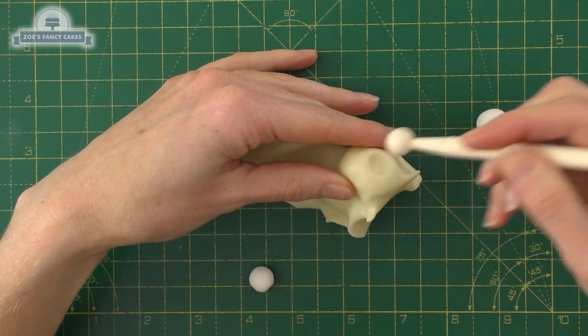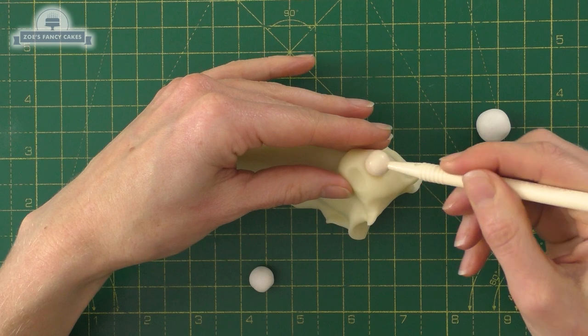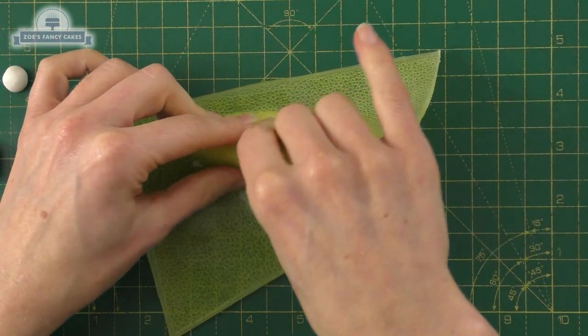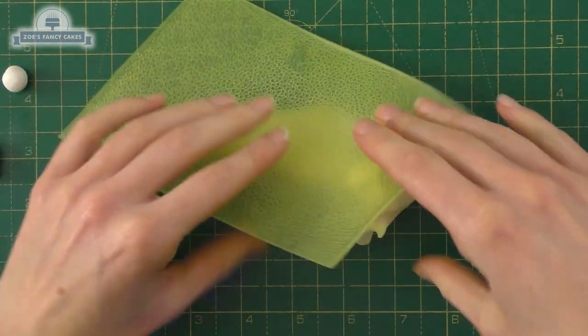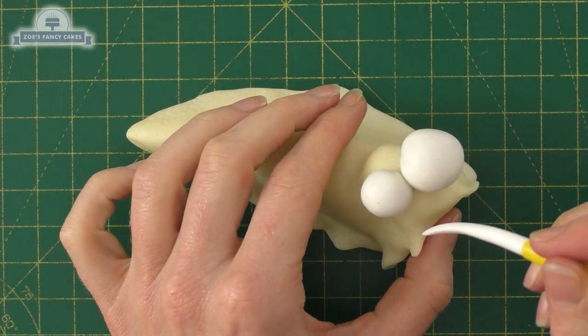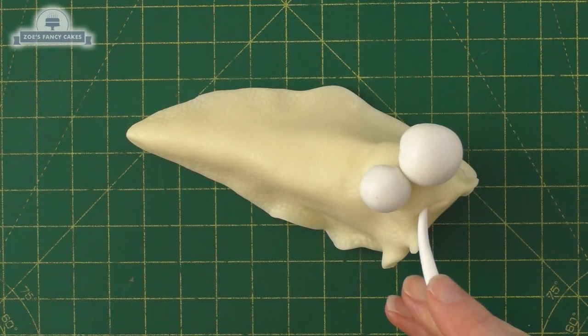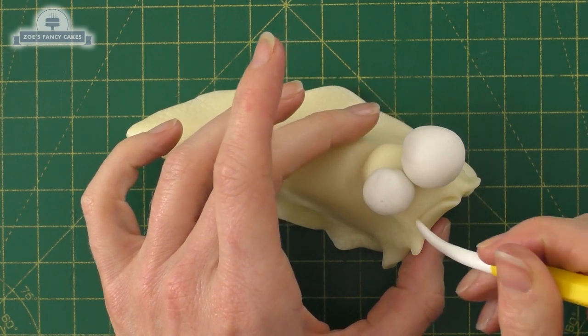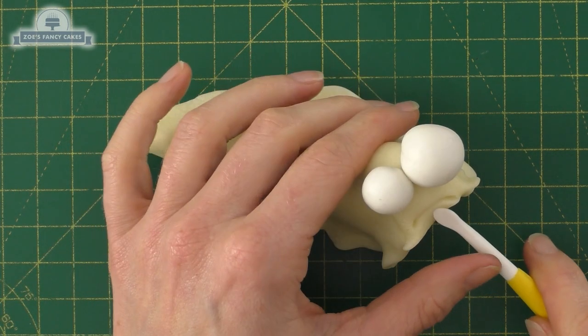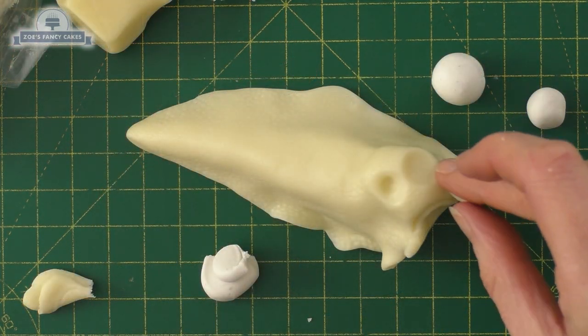So I'll just get those ready. I'm going to use an impression mat. This one's actually a basketball impression mat, but I thought it'd just give me a really nice texture on my snail. Just using a Dresden tool or a pointy-ended tool, just draw in a mouth. So he's going to be sad, so a kind of a curve in there.